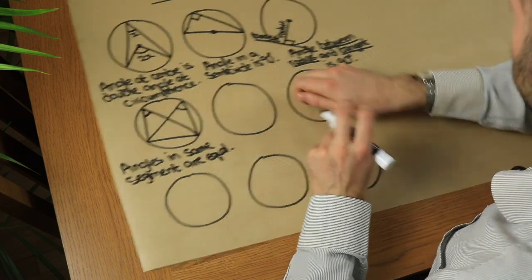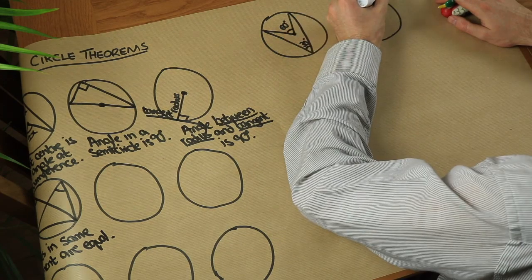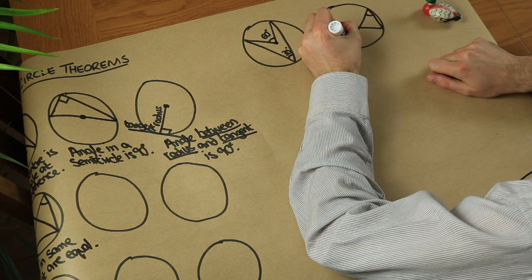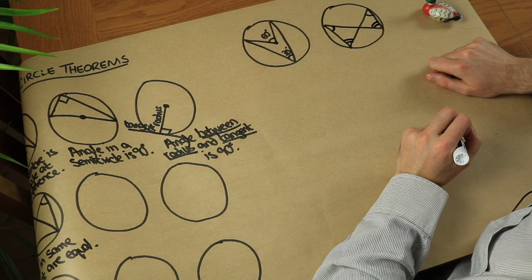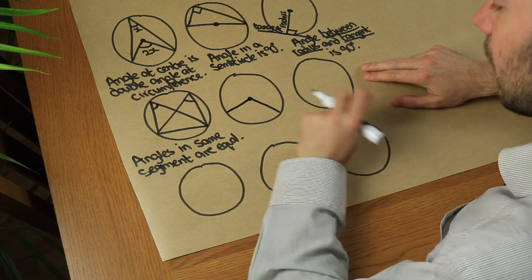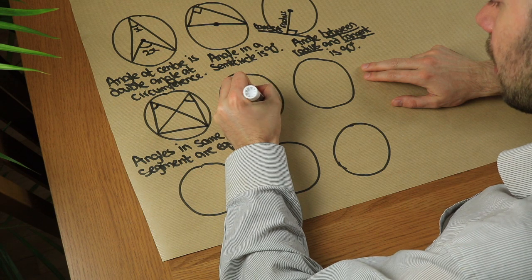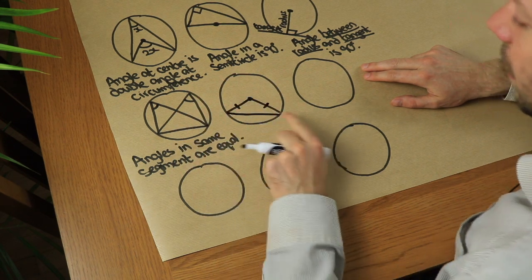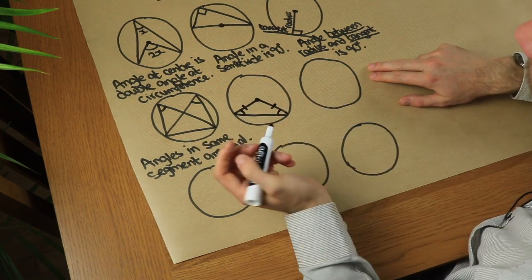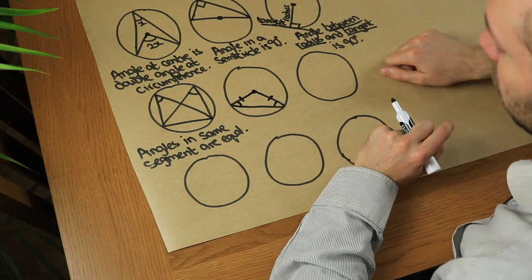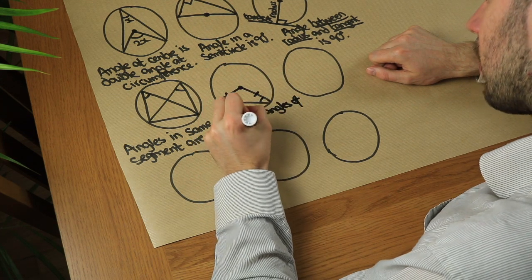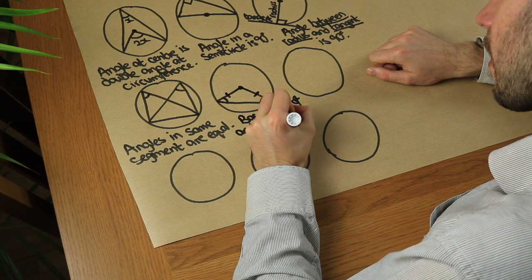A way to remember this is to think of a butterfly or bow-tie shape — the angles at the same end are equal. Next: if we have two radii from the centre of the circle, those two lengths are equal, which means the triangle formed is isosceles and the two base angles are the same. This isn't strictly a circle theorem — we quote: base angles of an isosceles triangle are equal.